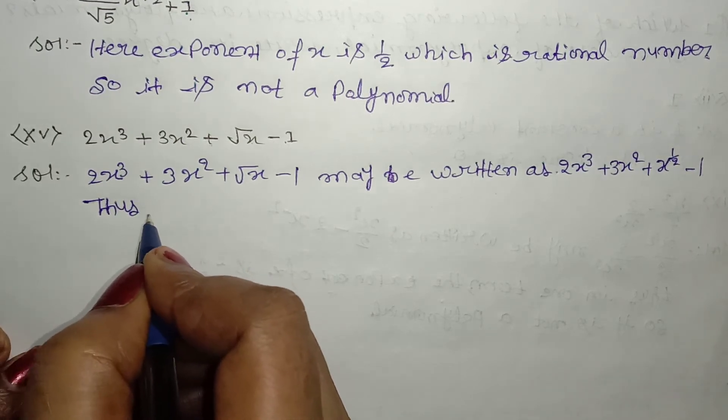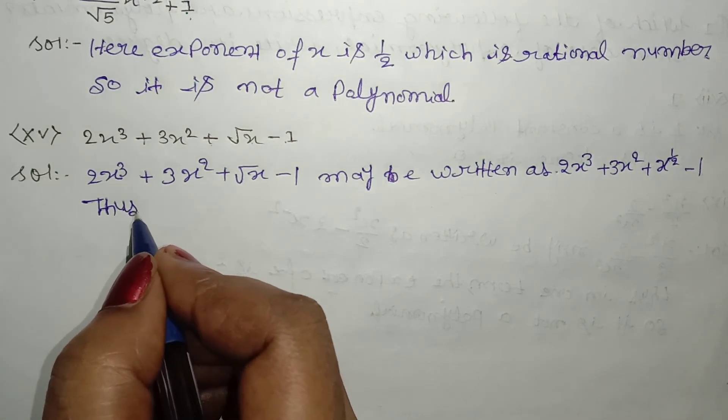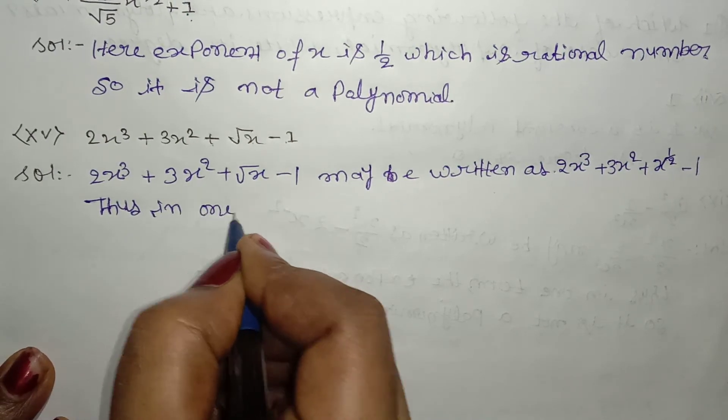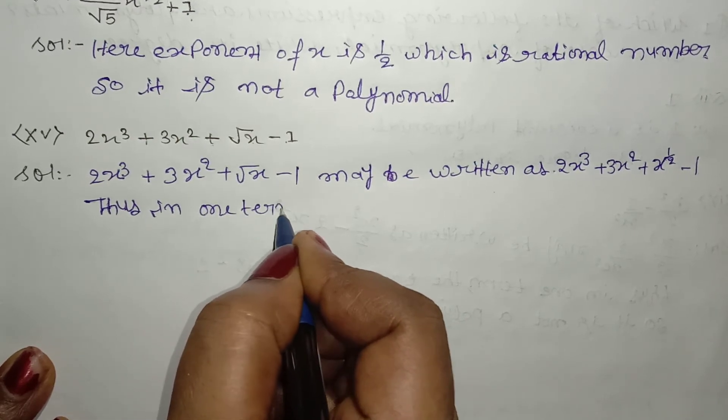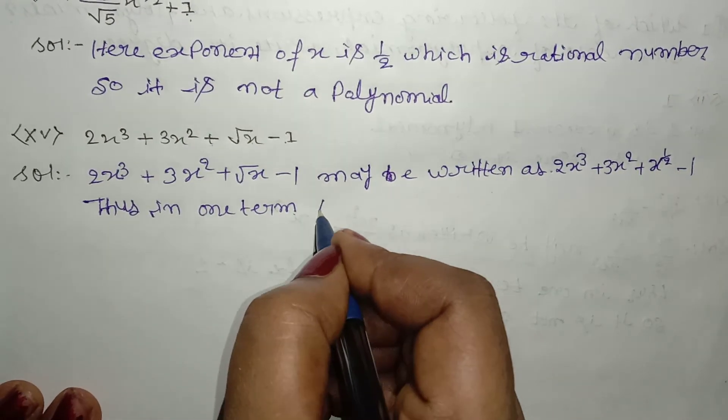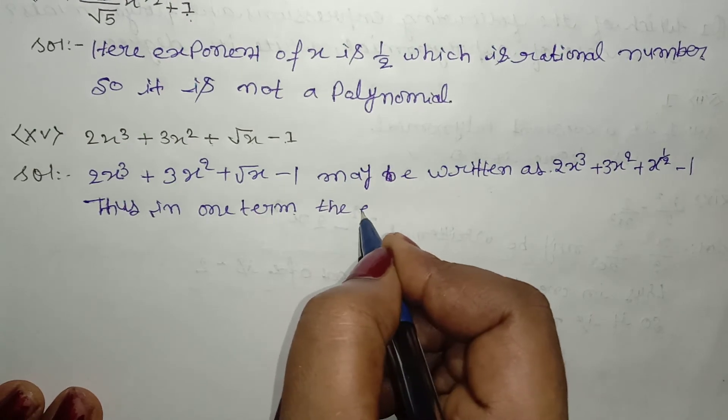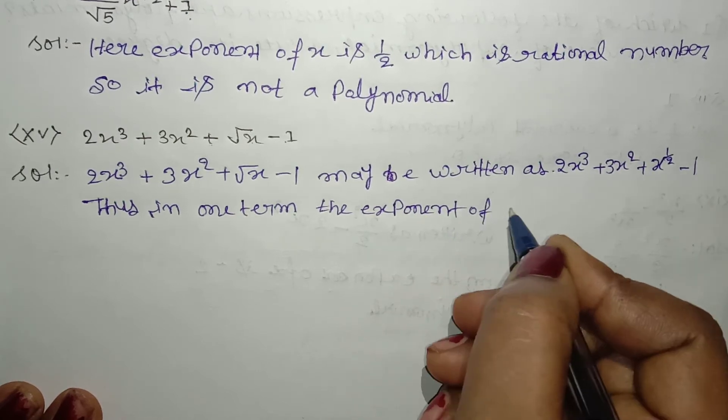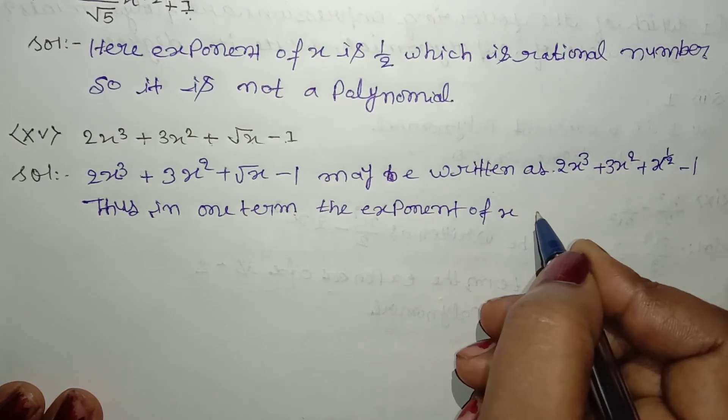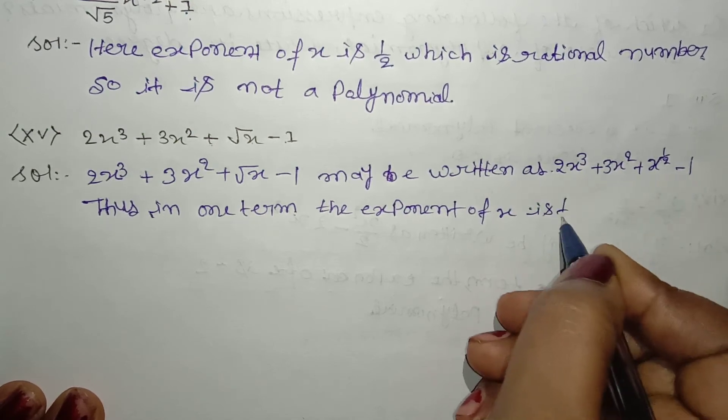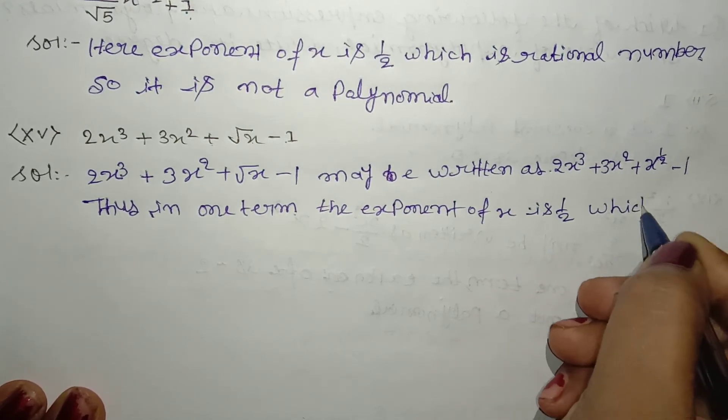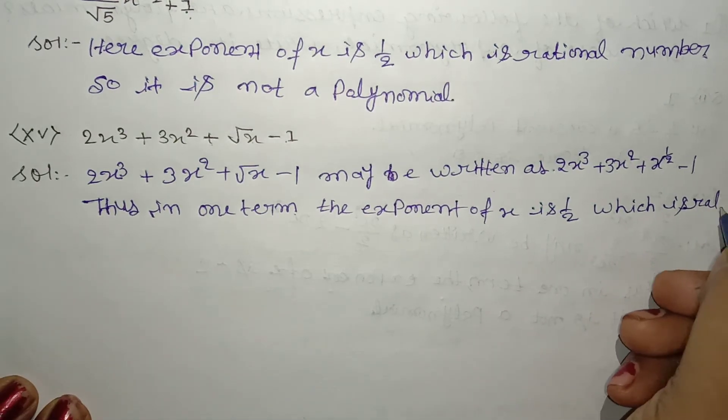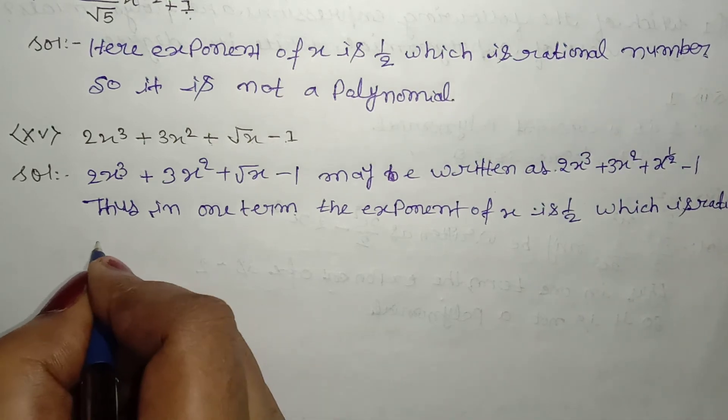In one term, the exponent of x is 1 by 2, which is a rational number.